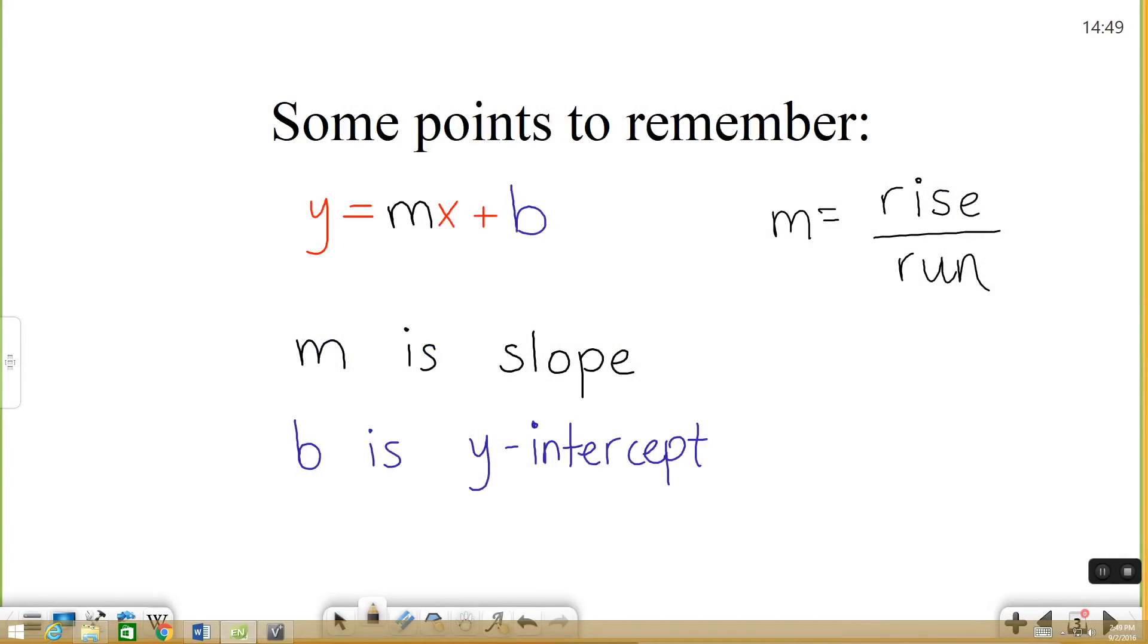So there's a couple of key points to remember when you're graphing the equation of a line. There is the slope-intercept form of an equation, y equals mx plus b. And in this equation, you have your y and your x, which are always going to stay y and x.